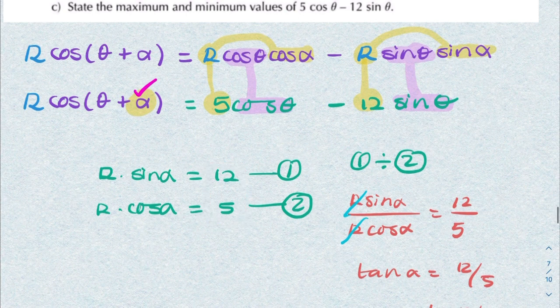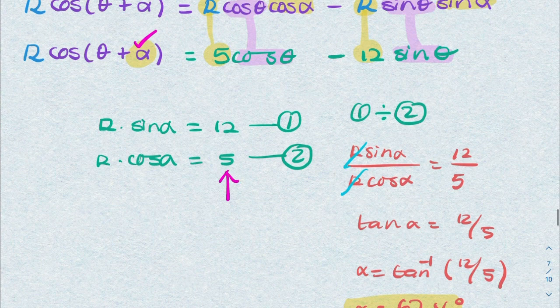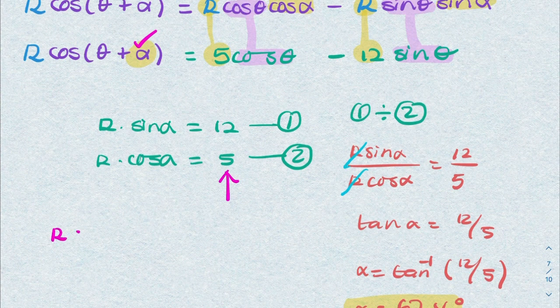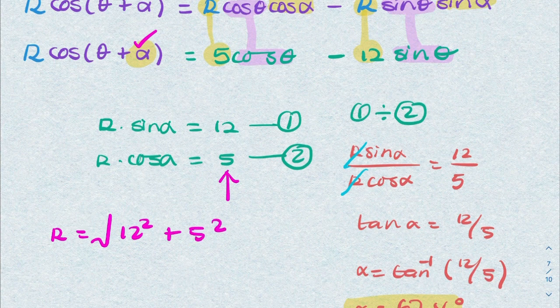by looking at these coefficients. So R is the square root of 12 squared plus 5 squared, and that gives you 13.